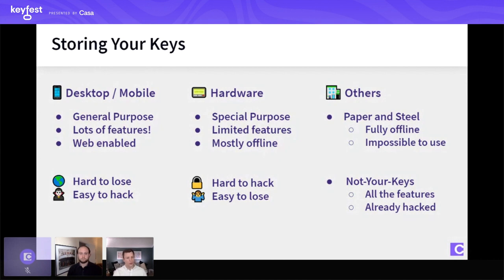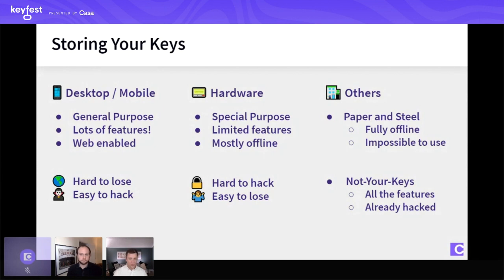That covers the three different ways you can store your keys. It's important to remember these are not mutually exclusive. The key is just a piece of data — it can be stored on desktop, mobile, hardware, and paper. It's hard to undo anytime you put a key in a particular medium, so we want to be very careful and very aware of where our keys are, how we're managing them, whether a key is pretty available or pretty secure — and keeping track of those things to manage them appropriately.